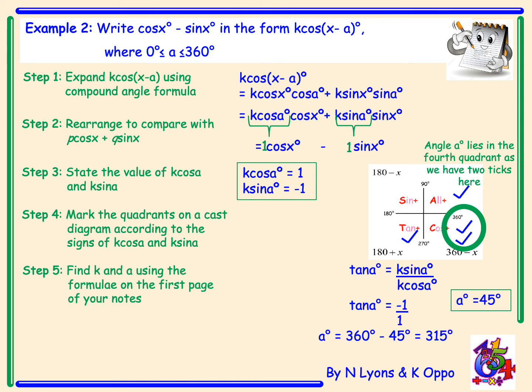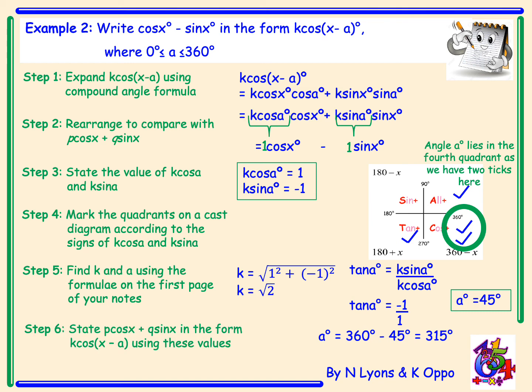Step 5: We find k using the formula. k is equal to the square root of 1 squared plus negative 1 squared, so k equals the square root of 2. The final step is to write cos x minus sin x in the form k cos of x minus a. So cos x minus sin x equals root 2 cos of x minus 315 degrees.